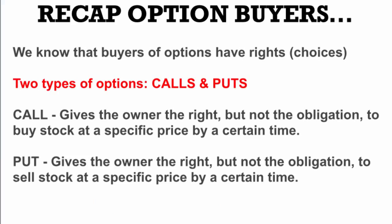We're going to get right into it here. But first, let's recap option buyers. We know that buyers of options have rights or choices — that's why they call it an option. There are two types of options: calls and puts. With a call, this gives the owner the right but not the obligation to buy a stock at a specific price by a certain time. With a put, this gives the owner the right but not the obligation to sell a stock at a specific price by a certain time.